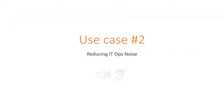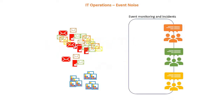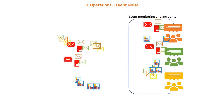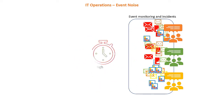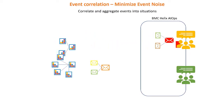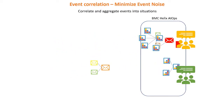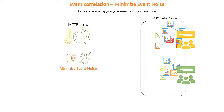Number 2: Reducing the IT operational noise is the primary concern of modern IT operations teams. With BMC Helix AIOps, you can reduce IT noise, build correlation patterns, determine the probable cause of resource failures, and reduce the mean time to resolve failures.